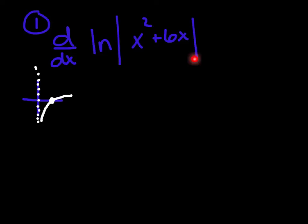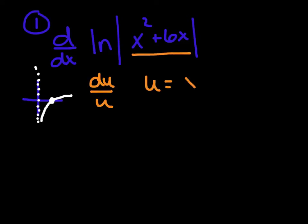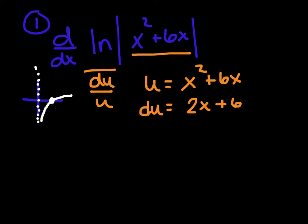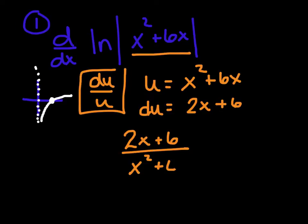The second I see ln, I'm thinking du over u. The u should be very obvious — it's whatever is inside. So u is x squared plus 6x. Take du: I get 2x plus 6. The rule simply says write du over u, so I've got (2x + 6) all over (x squared + 6x). Pretty straightforward.